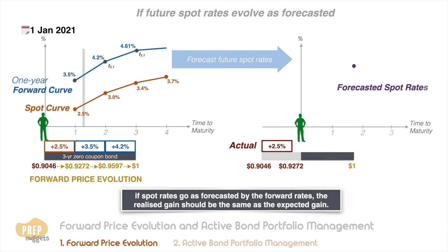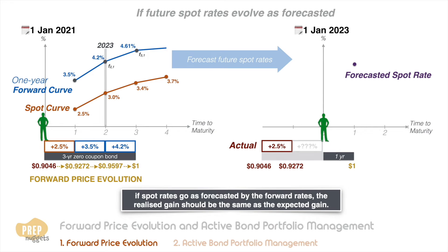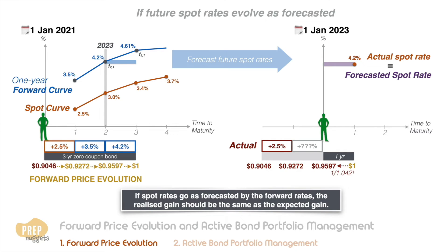As a practice, see if you can determine the expected gain in the second year if the one-year spot rate rises as expected. First, let's determine what the forecasted one-year spot rate should be. As we can see from the forward curve, the F21 rate corresponds to the one-year forecasted spot rate for 2023. The forecasted spot rate is therefore 4.2 percent. So if the actual spot rate is 4.2 percent, we discount the zero coupon bond by one period and we get a price of 0.9597.